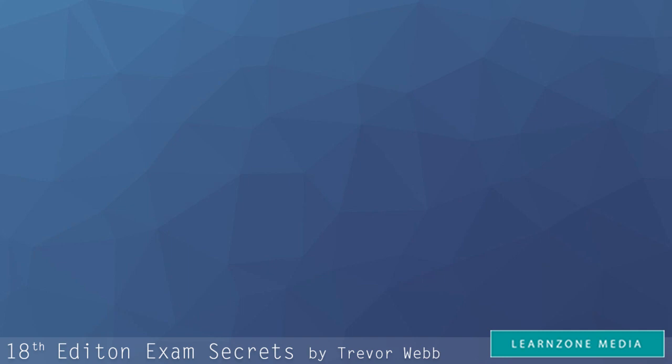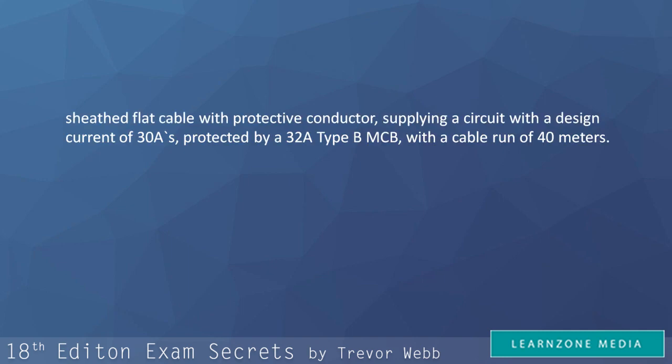The question might read, calculate the voltage drop for 2.5 millimetres square, 70 degrees celsius thermoplastic, insulated and sheathed flat cable with protective conductor, supplying a circuit with a design current of 30 amps protected by 32 amp type B MCB with a cable run of 40 metres.